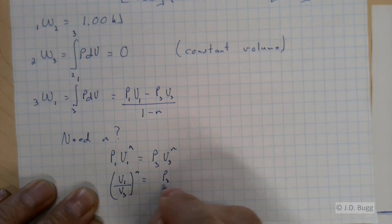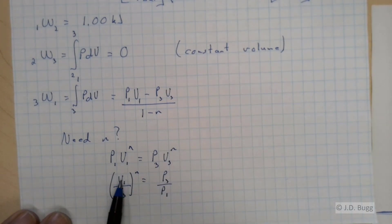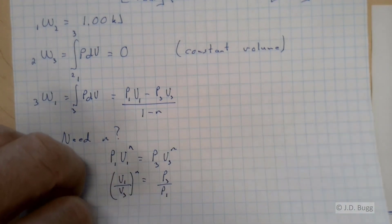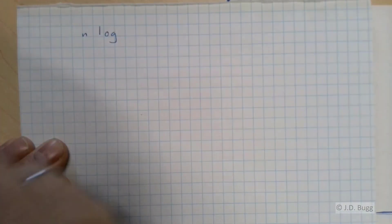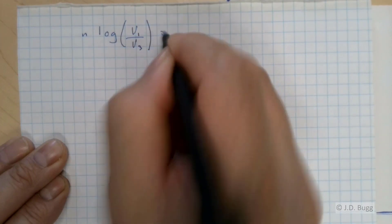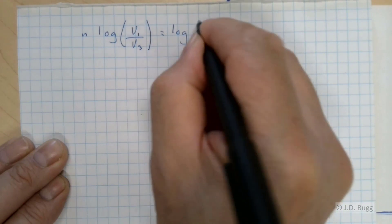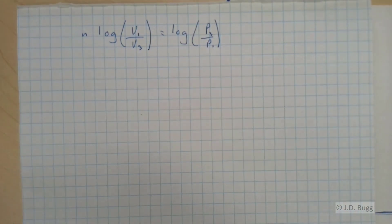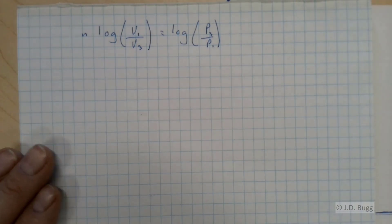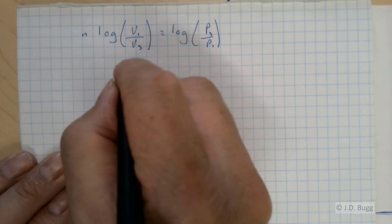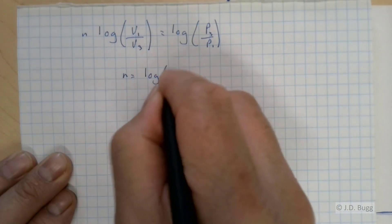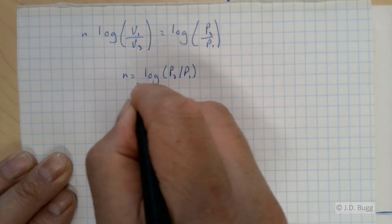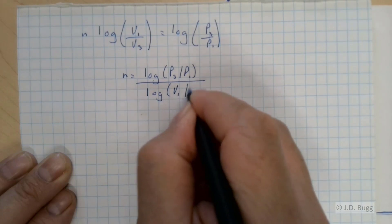So just rearranging this, we get V1 over V3 to the N is equal to P3 over P1. If I take the log of both sides of this equation, the left-hand side will be N log V1 over V3. And the right-hand side will just be the log of P3 over P1. So taking the log of both sides of that equation. So this will allow us to solve for N.